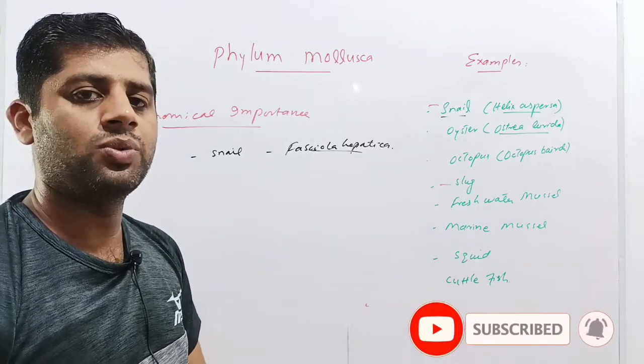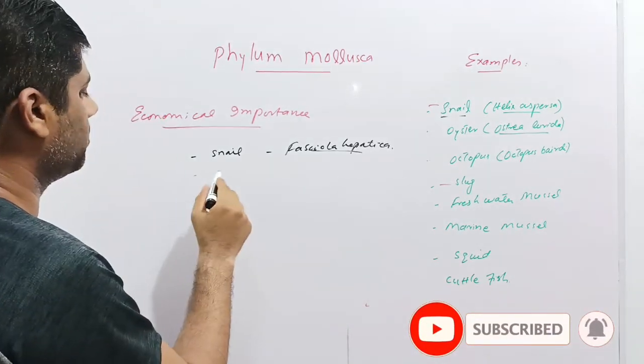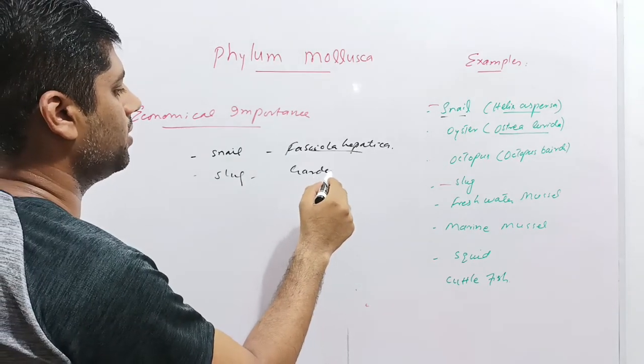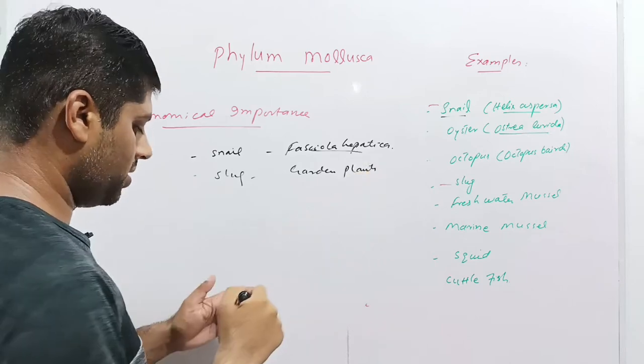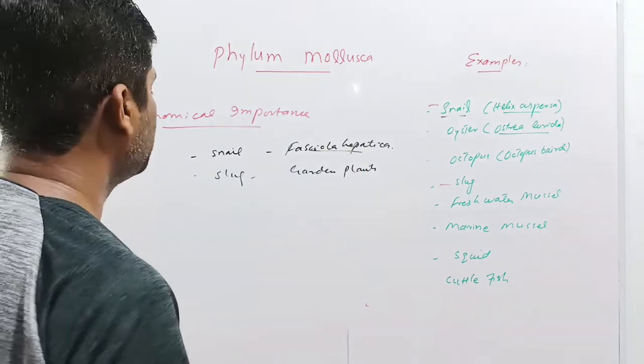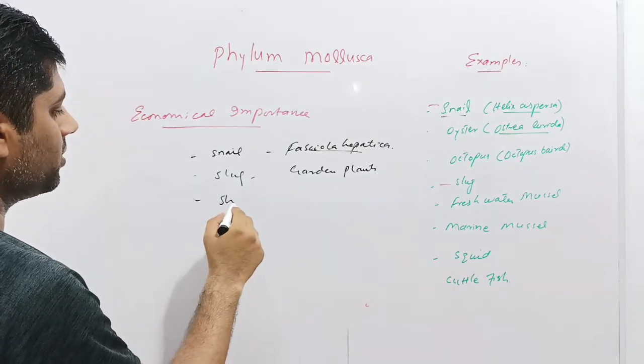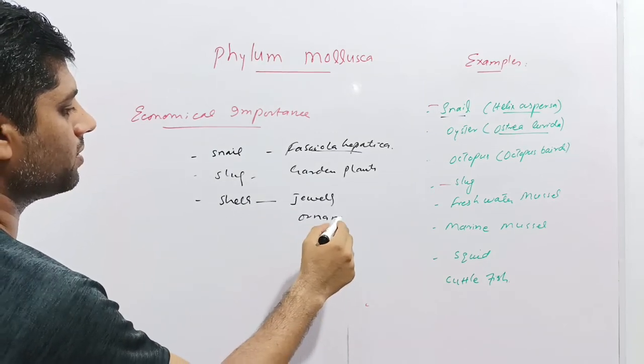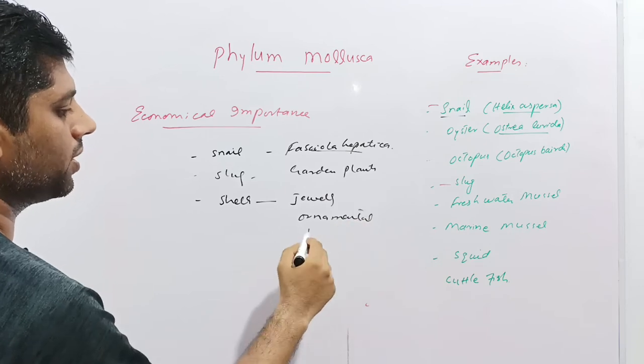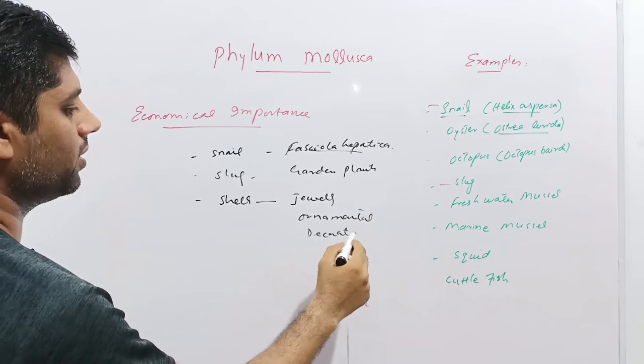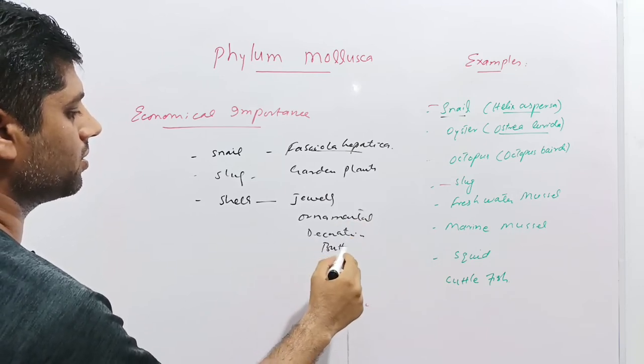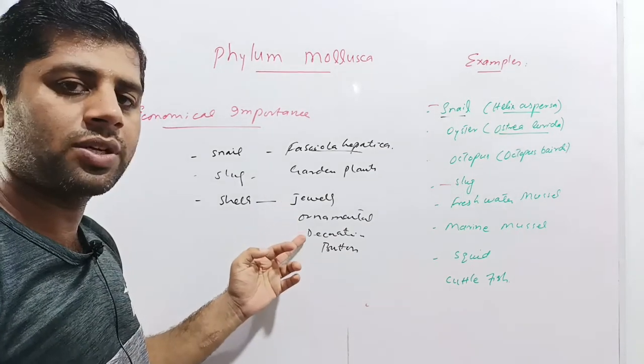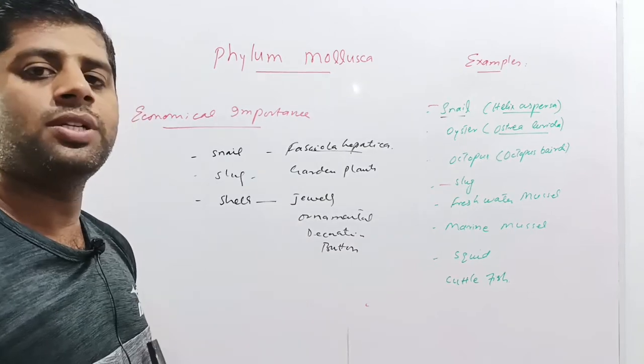The slug damages the garden plants. It eats away the garden plants, destroying the garden plants and flowers. The shells of these animals can be used in jewelry, ornamental purposes, decoration, and even in the button industries. The calcareous shells can be used in jewelry, ornamental purpose, decorative purpose, as well as in the buttons industry.